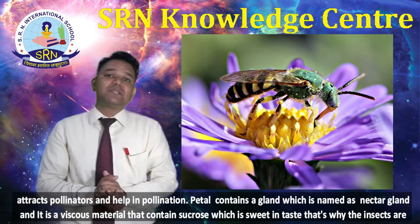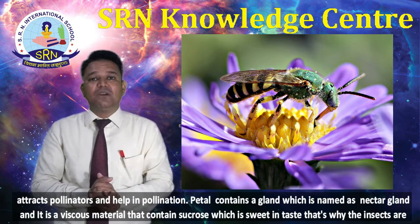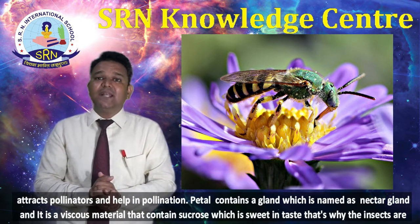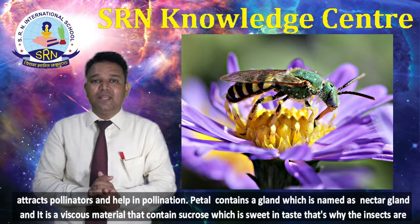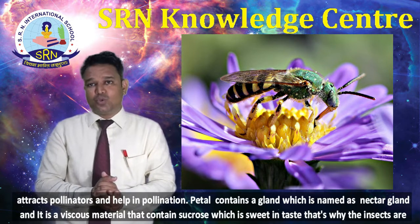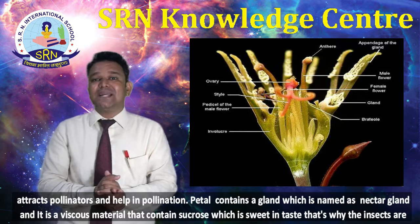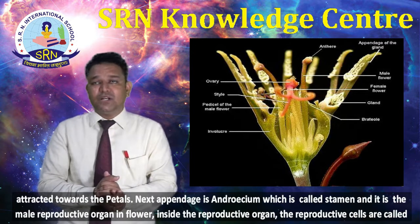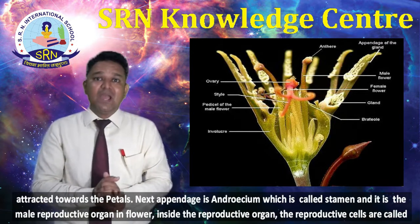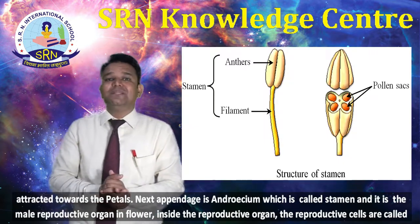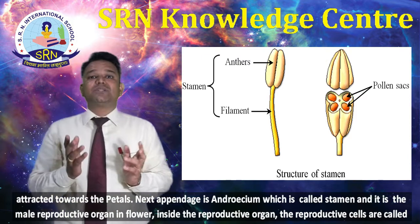Petals contain a gland named the nectar gland. It secretes a viscous material that contains sucrose, which is sweet in taste — that is why insects are attracted to visit the petals. The next appendage is the androecium, which is called the stamen, and it is the male reproductive organ in the flower.